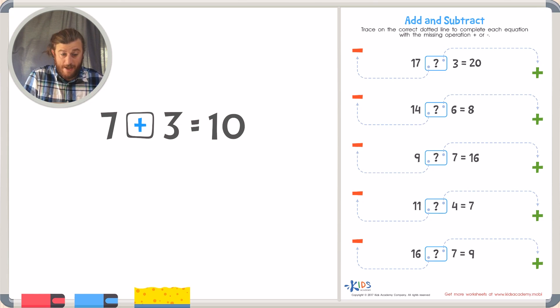But if you have a problem like 7 plus or minus 3 equals 4, you can see in this problem the first number is actually bigger than the answer. So if we're making your number smaller we need to take something away or subtract.